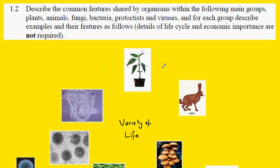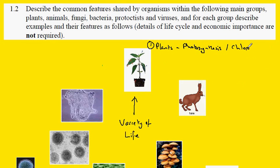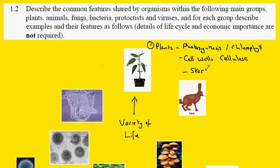IGCSE Biology, Syllabus Statement 1.2: the variety of life, beginning with the first major group of organisms which we call plants. Plants typically carry out photosynthesis, for which they have the pigment chlorophyll to trap light. A second major feature is the presence around their cells of cell walls composed of cellulose, and they store carbohydrate in the form of a molecule called starch.